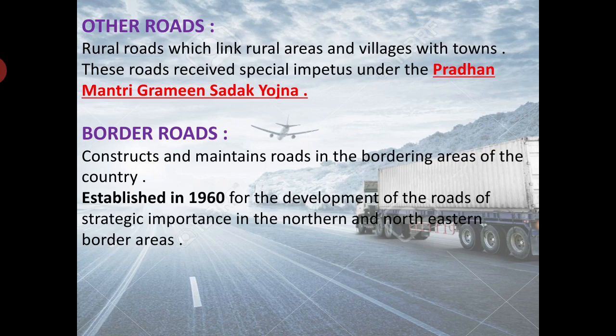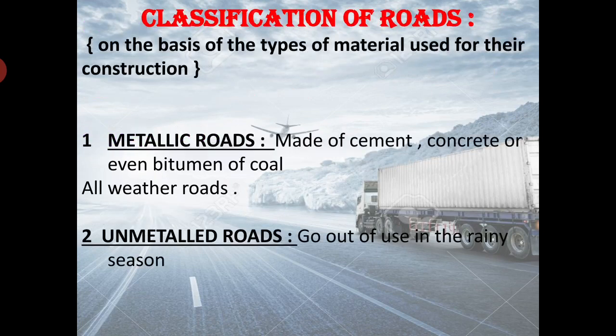Classification of roads on the basis of material used for their construction. First, metalled roads, made of cement, concrete or even bitumen of coal — these are all-weather roads. Second, unmetalled roads, which go out of use in the rainy season.